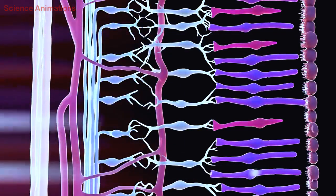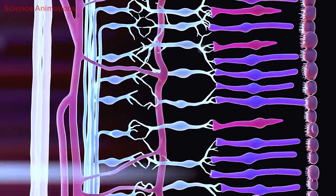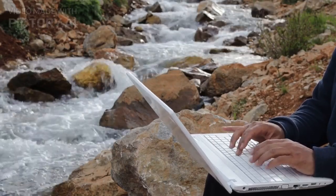Rod cells are responsible for night vision and peripheral vision. Rod cells are present in greater numbers than cone cells and are highly sensitive to light.